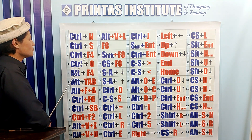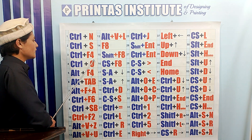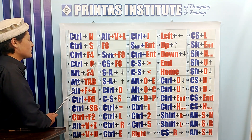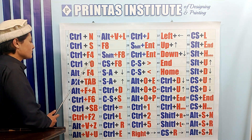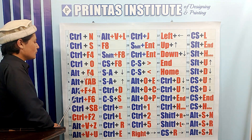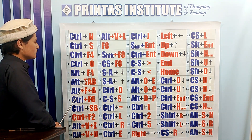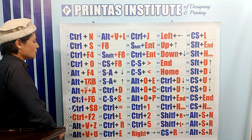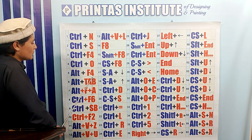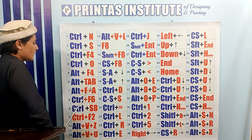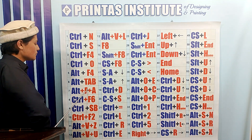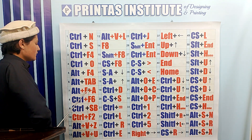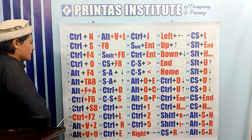Ctrl O is used to open the last edited document that we have saved in MS Word. We can open it by pressing Ctrl O. Alt F4 is used to close the MS Word program. Alt Tab is used to change from one program to another program. Alt F8 is used to save a document with another name — we can save one document with different names.